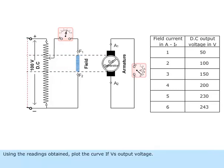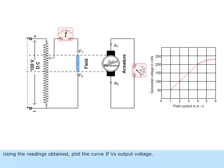Using the readings obtained, plot the curve of V versus I output voltage. This curve is called the open circuit characteristic of the DC generator.